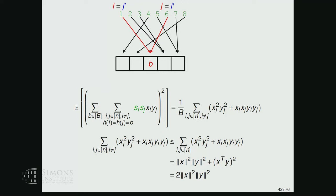By Cauchy-Schwarz, the squared dot product is at most the product of squared norms. So all in all, the variance is upper bounded by 2 times the product of Euclidean norms squared, divided by B.